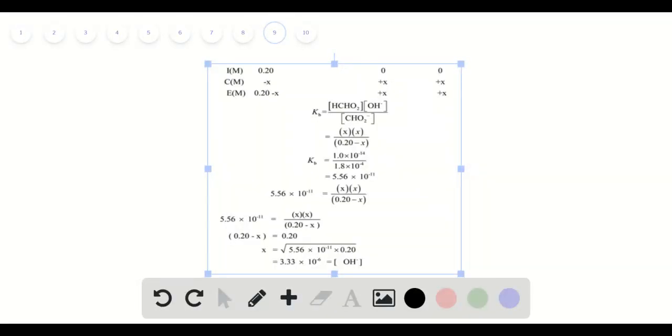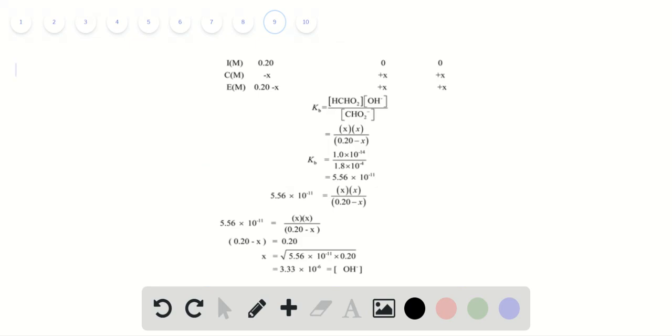We are provided with the concentration of 0.20 molar KCHO2. The given salt is basic in nature. Let me represent the chemical equation: CHO2 negative plus water.